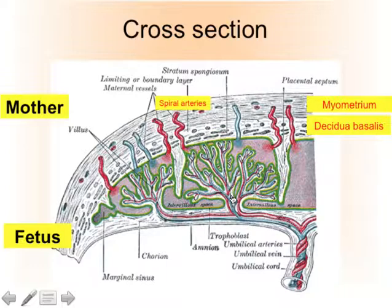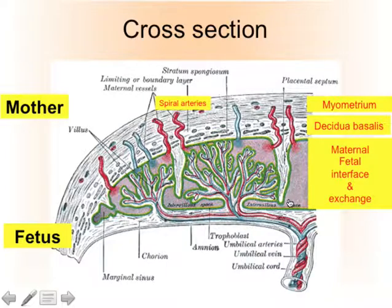This is the fetal part of the placenta and this is the area where the maternal-fetal interface is located and where the exchange takes place — for instance, O2, CO2 and glucose. Below we have the umbilical cord: two arteries and one vein.